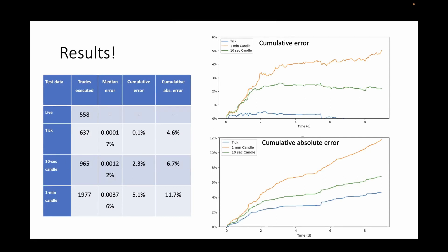These graphs measure the cumulative error — the difference between the backtest result and the actual real result gotten from the live markets. As the results show, the tick data-based backtest is much, much more accurate. We can also see that there's a considerable difference between the one-minute candle and the more granular 10-second candle data. As the period of the candle decreases, the error also decreases.